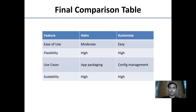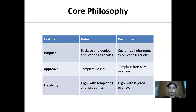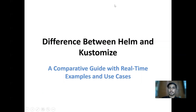Final comparison table: Helm's ease of use is moderate; Kustomize's ease of use is easy. Both have high flexibility. Helm's primary use case is app packaging; Kustomize's is config management. Scalability is high for both. In conclusion, Helm is best for packaging and deploying applications; Kustomize is best for configuration customization. The recommendation is to use based on project needs or combine both for advanced workflows. Thank you.